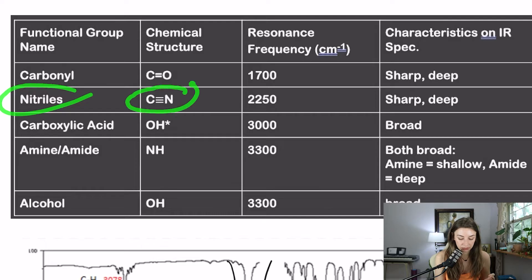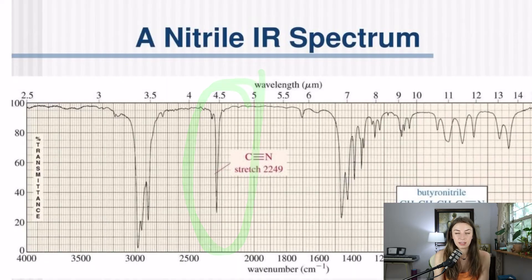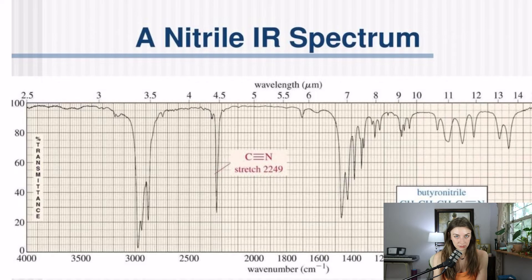So moving on to nitriles, which is C triple bonded to a nitrogen, resonance frequency is going to be about 2250 and it's going to be sharp and deep. So you can see this right here is our nitrile. These are not as high yield, but I would still definitely know them. Very sharp, moderately to pretty dang deep. We're right on that number of 2250. So that's a nitrile.